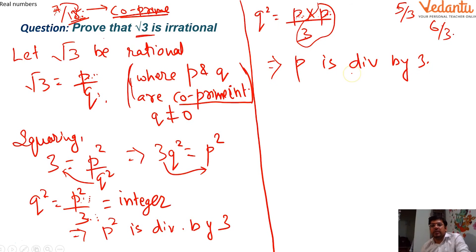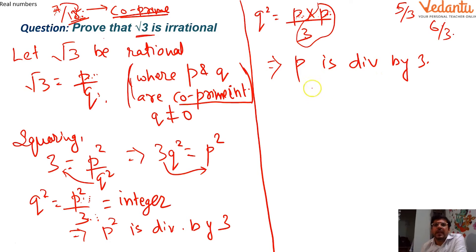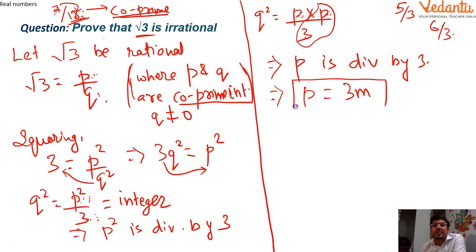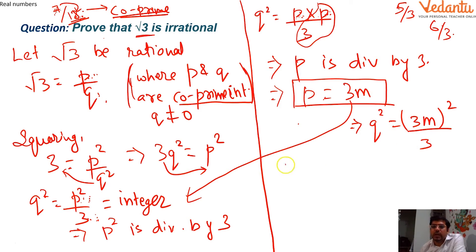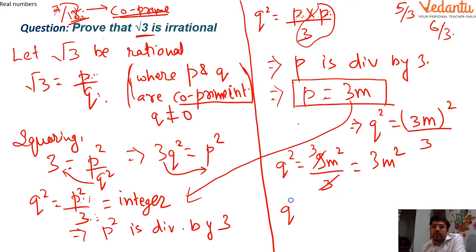Since p is divisible by 3, we can write p = 3m for some integer m, because p must be a multiple of 3. Substituting p = 3m back into the equation 3q² = p², we get: q² = (3m)²/3 = 9m²/3 = 3m². So we have q² = 3m².